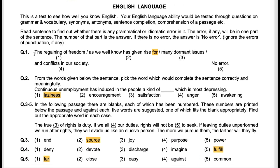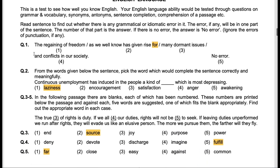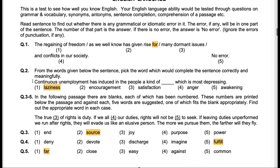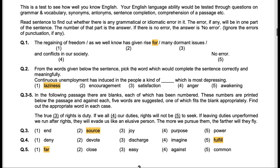Let's come to the English language section. English is very simple. Questions 3 to 5 are a little tricky. Question 1 — we have to figure out the incorrect part of the sentence, which is option 2. As we well know, it says 'given rise for' — you do not say 'given rise for,' you say 'given rise to.'